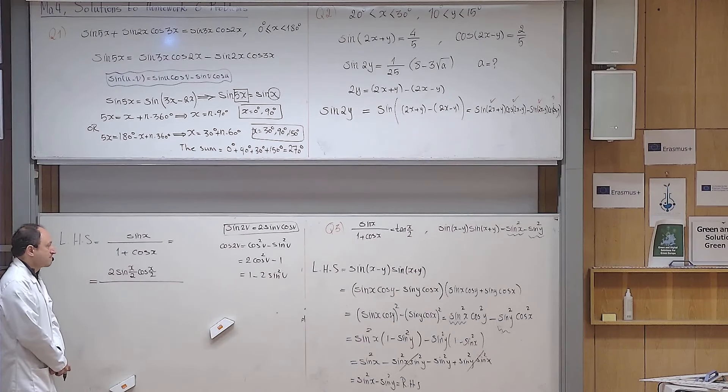So the expression becomes 2sine(x/2)cosine(x/2) divided by 2cosine²(x/2). The twos cancel, and one cosine(x/2) in the numerator cancels one in the denominator. What remains is sine(x/2) divided by cosine(x/2), which is tangent(x/2) — and that equals the right-hand side. The identity is proved.